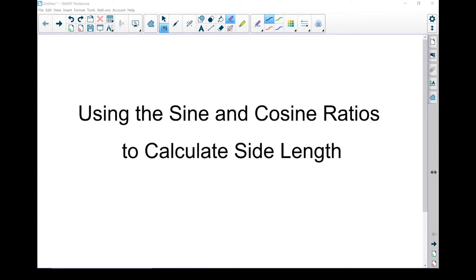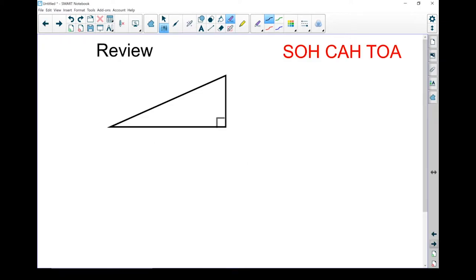Continuing on with our trigonometry, we're going to use the sine and cosine ratios to find the side lengths on a triangle. Let's go through a bit of review first.